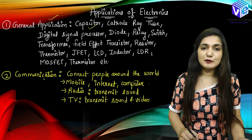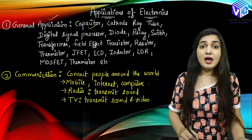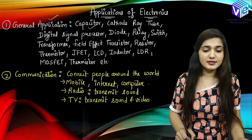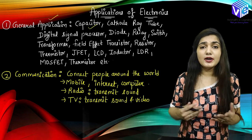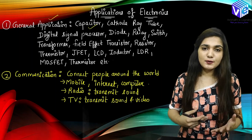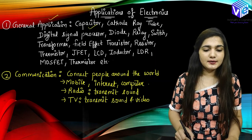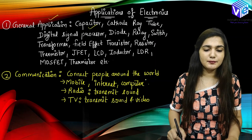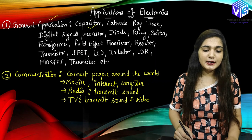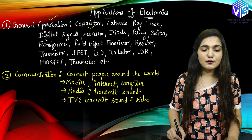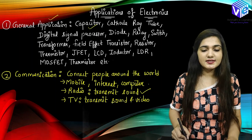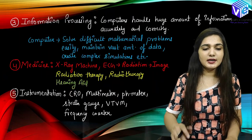These electronic components are also used in communication. If you have seen my communication videos, I was using transistors, diodes, switches, and many other electronic components. Communication is going to connect people around the world — if I want to connect to a person in the US, I can do it with the help of mobile phones, internet, and computers. Radios transmit sound only, while televisions transmit both sound and video — that is the basic difference between radio and TV.